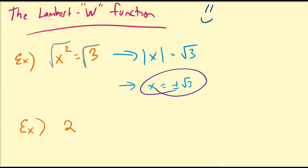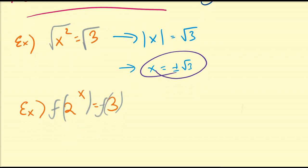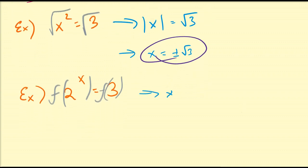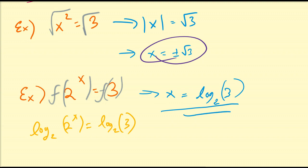Another example: suppose we have 2 to the x is equal to 3, and we want to solve for x. We need some function such that once we apply it to both sides, we get only x on the left-hand side. Since we do not naturally know what it is, we construct such a function. This function, familiar to all of us, is the logarithm base 2 of x. Once we apply it, we obtain our solution as log base 2 of 3.